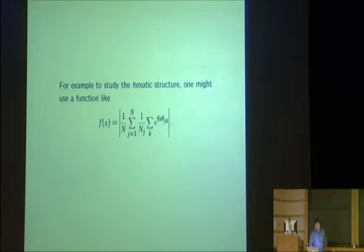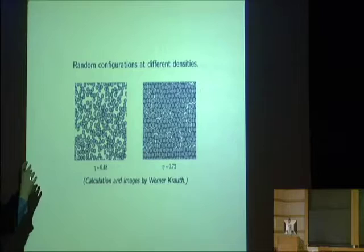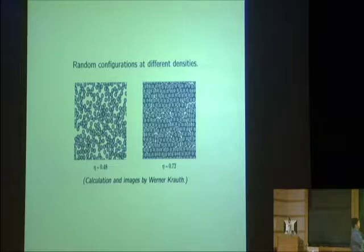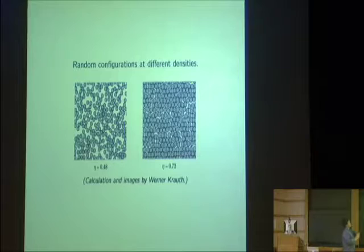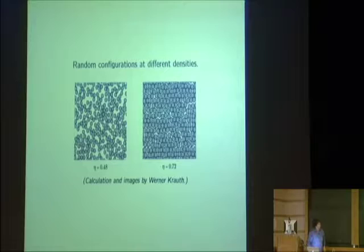Here's what you don't do to get one of these pictures. One way would be to throw down a bunch of random disks, and if two of them overlap, reject, otherwise accept. That is the mathematically correct definition — the measure where we give every non-overlapping configuration equal probability. But the problem is that in the whole age of the universe, you'll never get even one point in the space you're trying to sample from.